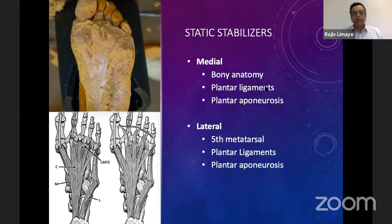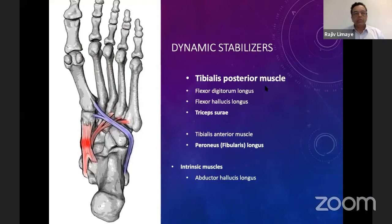In the foot, we have static stabilizers and dynamic stabilizers. One of the important structures of the foot is the bony anatomy, and that leads to intrinsic stability in various joints in the foot. The medial and lateral side of the bony anatomy provides a good structure to the bone, and that has been subsequently supported by the dynamic stabilizers. The dynamic stabilizers are the muscles and the tendons in the foot. They can be both intrinsic or extrinsic, and the posterior tibial tendon is the one which takes control of most of the mid-foot region.